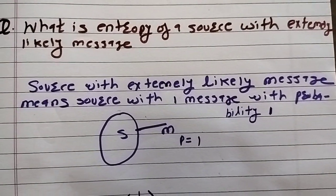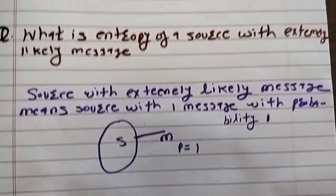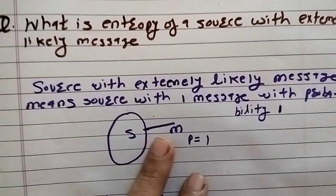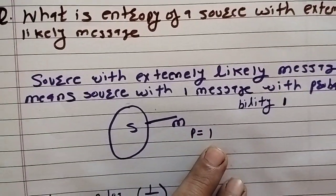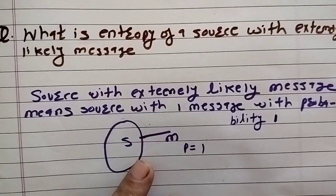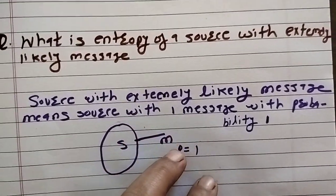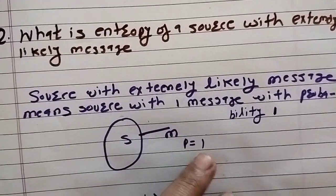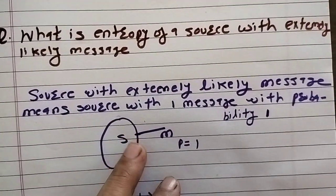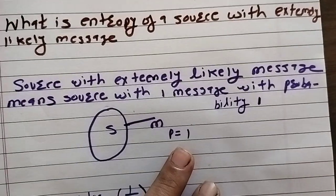Let us find the entropy of a source with extremely likely message. The source with extremely likely message means the source has only one message with the probability one. Because if there are a number of messages, their probability should be added and it should be one. But it is the source with extremely likely message, means there is only one message with probability one.